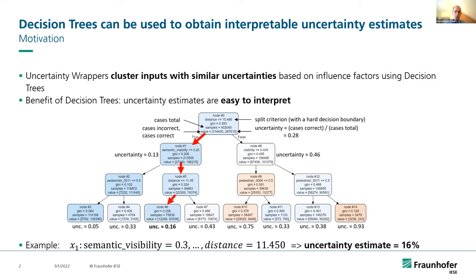To obtain interpretable uncertainty estimates, the uncertainty wrapper relies on a decision-tree approach. This decision tree is used to cluster inputs with similar uncertainties based on influence factors like weather conditions or distance. The key benefit is the interpretability of the uncertainty estimates. For example, a data point with feature values for distance of 11.45 meters and semantic visibility of 0.3 — by evaluating the branching criterion in the nodes of this decision tree, we can easily understand which features and feature values lead to a specific uncertainty estimate. The data point is assigned to a leaf with an uncertainty of 16%.